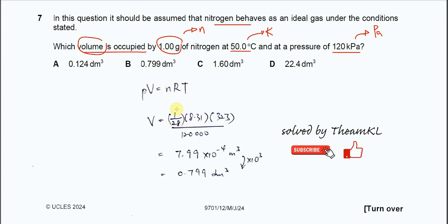The moles is 1 gram over 28 grams per mole. This is the gas constant R, which will be given in the table. And this is the temperature in Kelvin over the pressure in Pascals. After that, you get 7.99 times 10 to the power of negative 4 meters cubed.